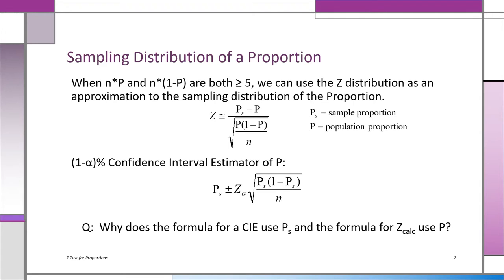All we need to know at this point is that when n, the sample size, times p, the population proportion, and the complement n times 1 minus p — as long as they're both at least 5, greater than or equal to 5 — then the z distribution is a very good approximation to the sampling distribution of the proportion. Therefore, we can use the formula for z to convert the sample proportion, a random variable, to a z statistic.